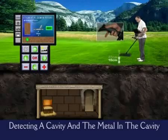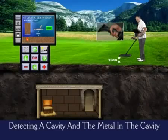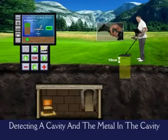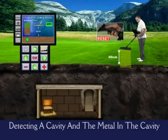Cavities are places like caves, tunnels, cellars, and shelters. Those kinds of structures are shown on the screen as cavities.